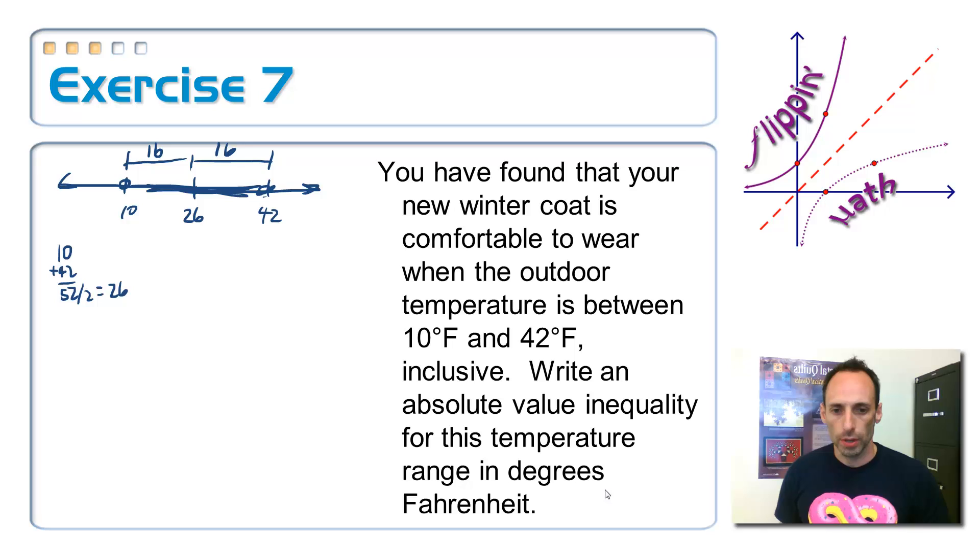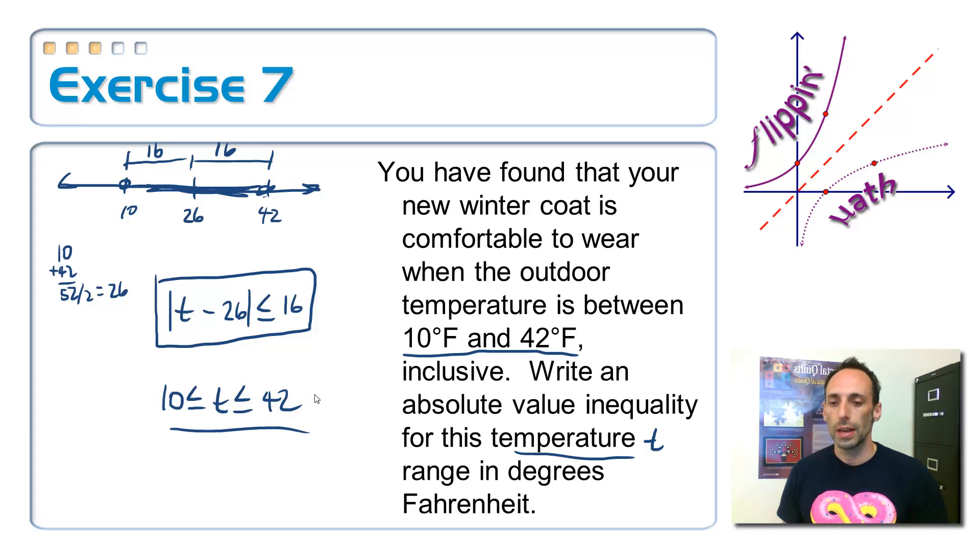So let's write this as an absolute value inequality. I would go, let's use T for temperature as the variable. The absolute value, T minus, and it's the middle number, it's 26. So, so far I'm saying the distance away from the number 26, it's in between those two, so it has to be, and equal, less than or equal to, and now the tolerance, which is 16. So there's the absolute value inequality, and if I'm going to solve it, well, I was pretty much given the solution already. It is in between 10 and 42, right? So there would be the answer for that thing.